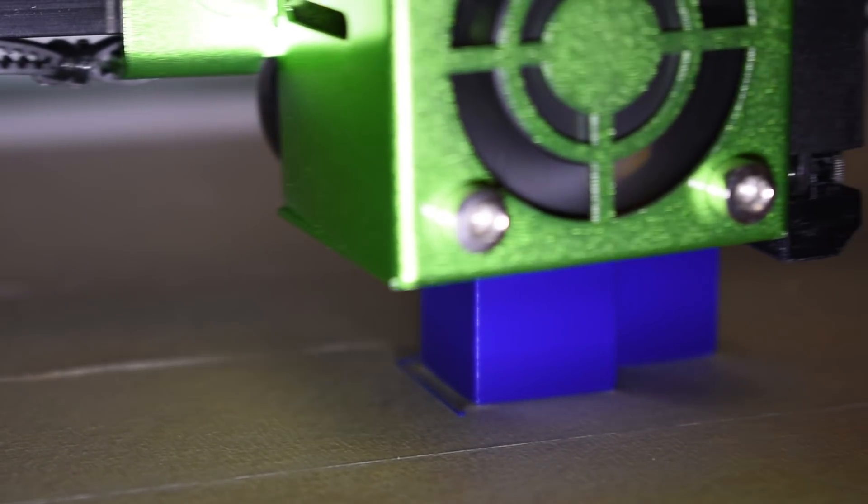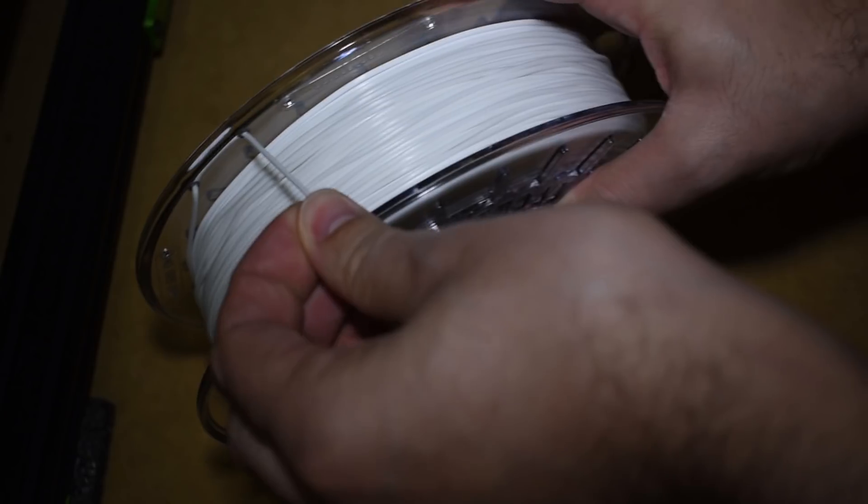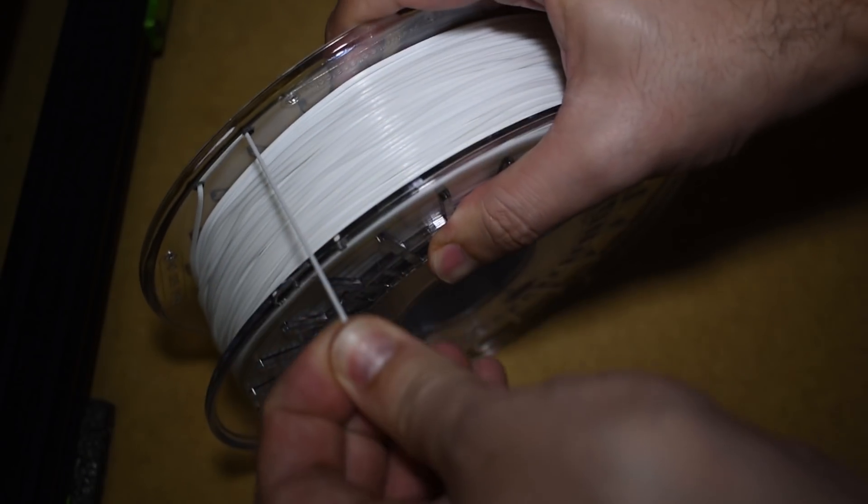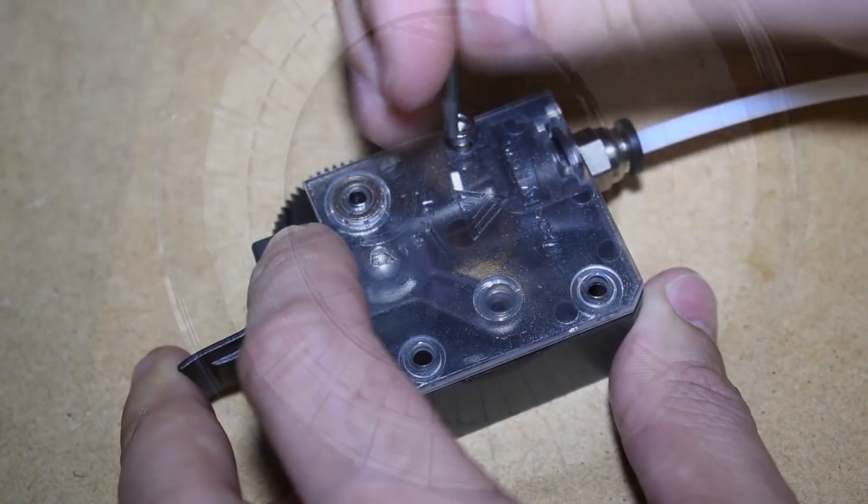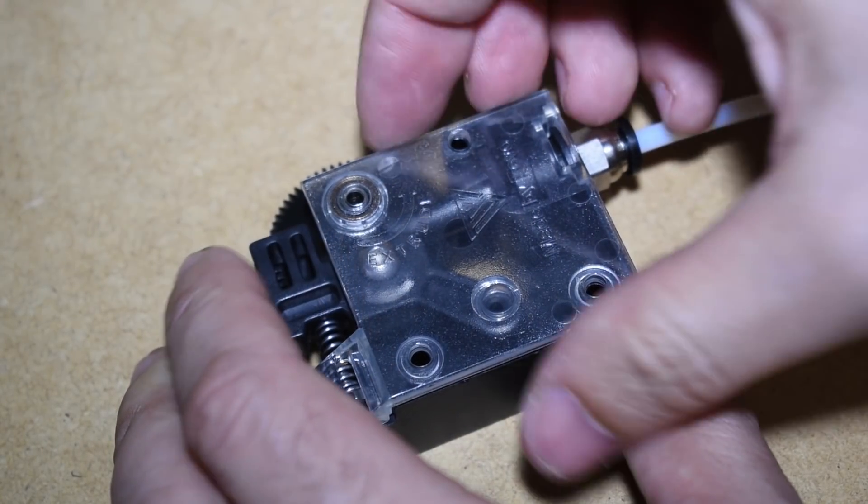Some filaments might require more or less tension. A flexible filament, for example, can have a different tension setting compared with a rigid one. But first, let's look at the Tivo Titan extruder.